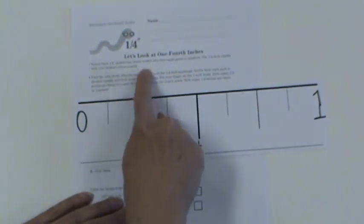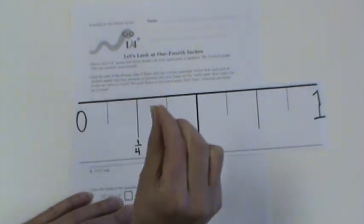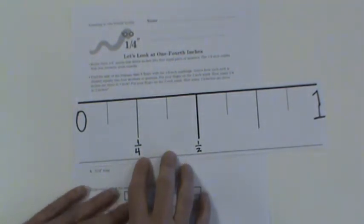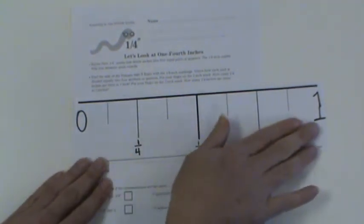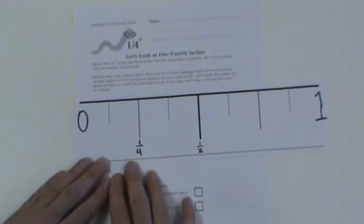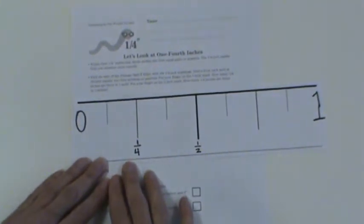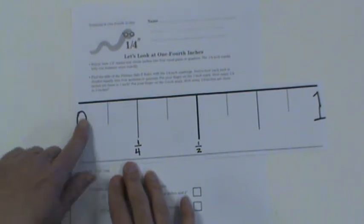So when you get down to the fourth, you've got a more exact measurement. On the inch side of your ruler, you can notice how each inch is divided into four sections or quarters. Here's an inch on my giant ruler.